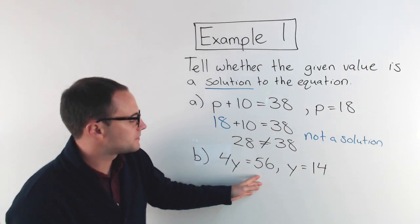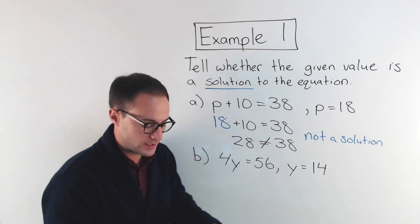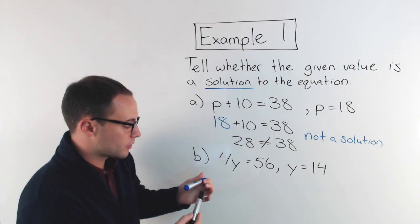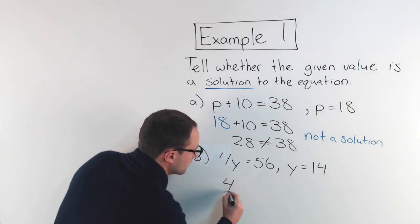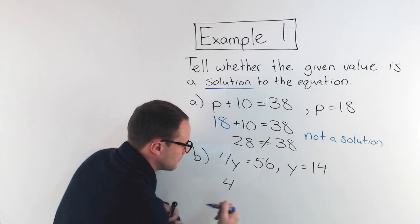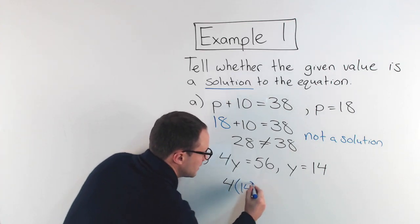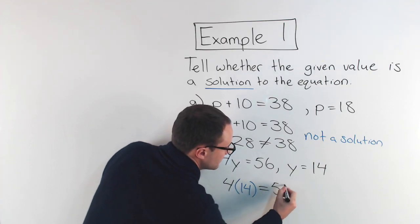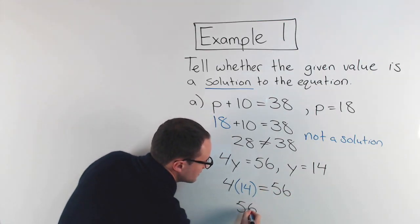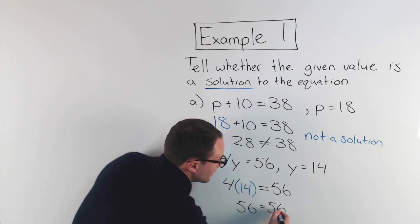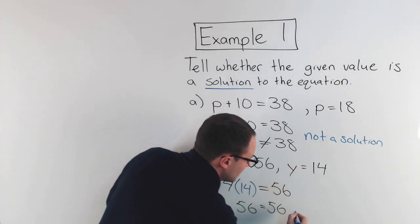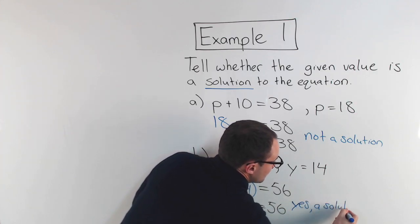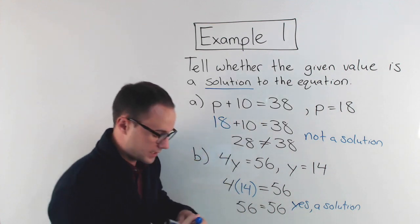Let's do the next one. 4y equals 56, y is equal to 14. Again, we're seeing if 14 is a solution for y in this equation. So we're going to substitute: 4 times 14, using parentheses when I substitute, is equal to 56. Well, 4 times 14 is 56, which equals 56. That means yes, 14 is a solution.